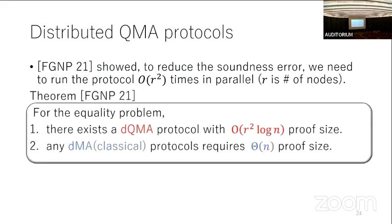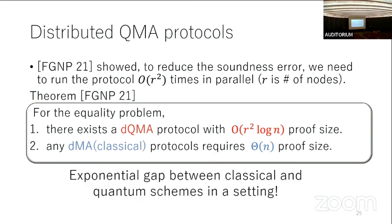They also showed that any classical scheme requires linear-size proof. So when the network size is small, there is an exponentially large gap between the classical and quantum schemes for the equality problem.